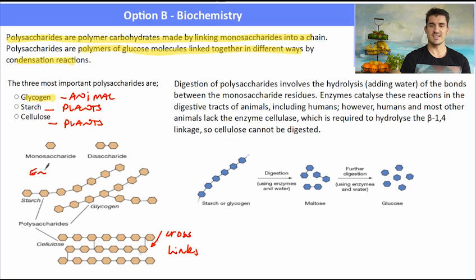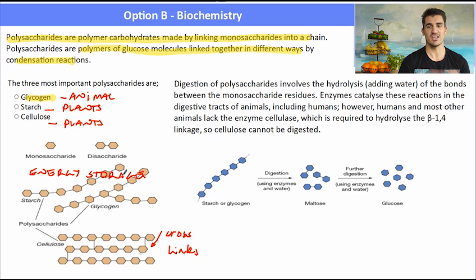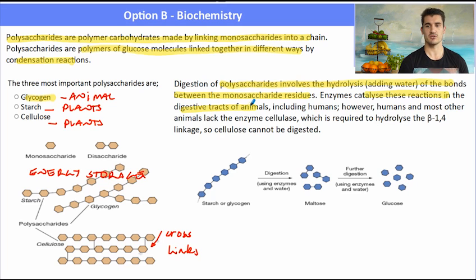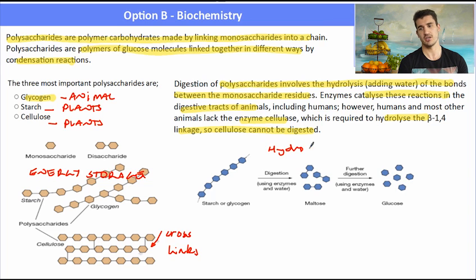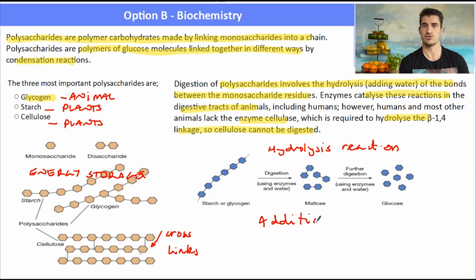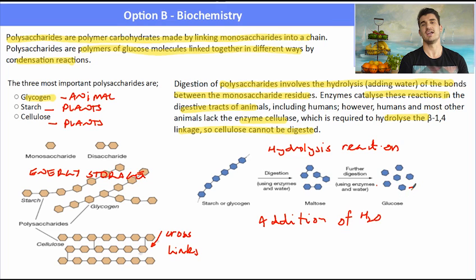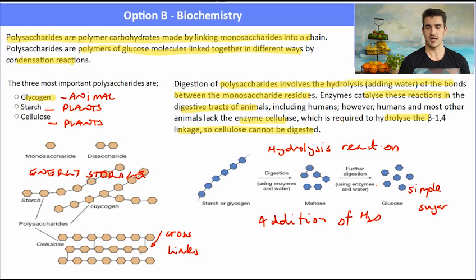Starch is the energy storage in plants — it's glucose that can be used in cellular respiration — and glycogen is the energy storage in animals. Digestion of polysaccharides involves hydrolysis, or the addition of water, to break the bonds between the monosaccharides. We have enzymes that catalyze these reactions in animals. However, most humans lack the enzyme cellulase, which is required to digest cellulose, so cellulose actually can't be digested by humans and animals. If we have starch or glycogen, we can undergo a hydrolysis reaction — addition of water — to break it down into disaccharides, and then further digestion breaks it down into glucose, which is transported to different parts of the body and used to produce energy. Remember that disaccharides and monosaccharides have plenty of OH bonds, so they're very soluble.